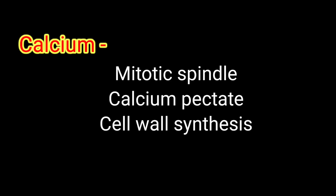Fourth, calcium. It is easy, so remember it directly. Calcium is required by meristematic and differentiating tissue. During cell division, it is used in the synthesis of cell wall, particularly calcium pectate in the middle lamella. The main thing is it is involved in the formation of the mitotic spindle. It also plays a role in regulating metabolic activities.